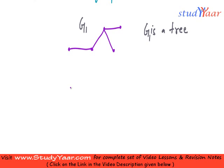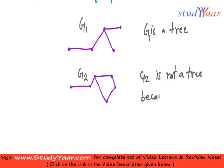What is not a tree? Something that has cycles. So if you have something like this, then this is not a tree. Let us put G2 and we are going to say G2 is not a tree because of the cycle.